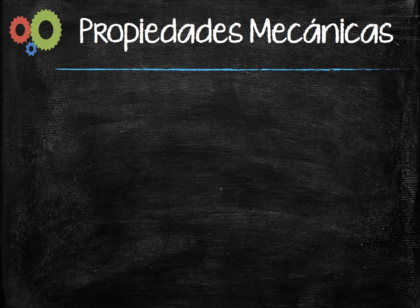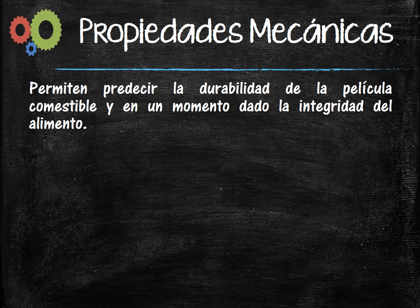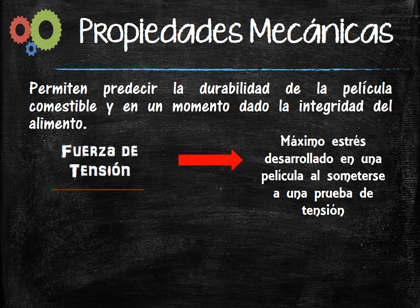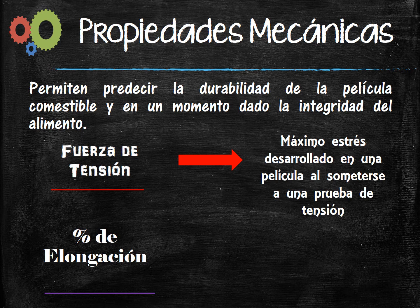Mechanical properties. They allow us to predict the durability of the edible film and at any given time the integrity of the food. Tensile strength is the maximum stress developed in a film when subjected to a stress test, and elongation percentage is the ability to stretch.